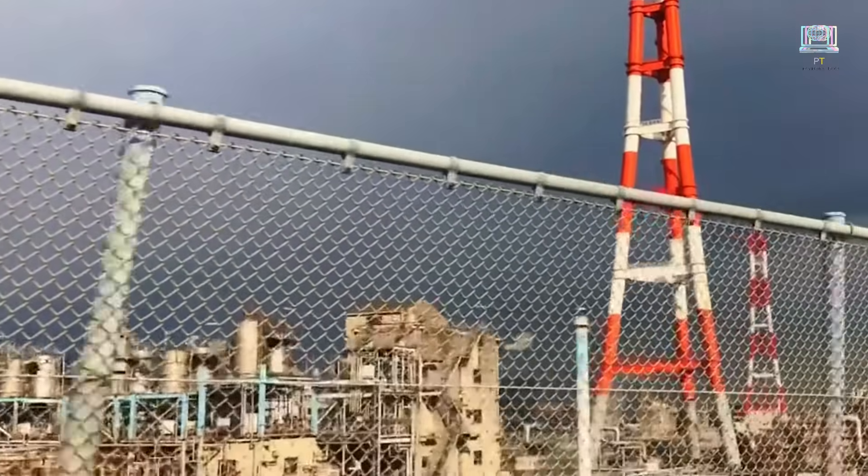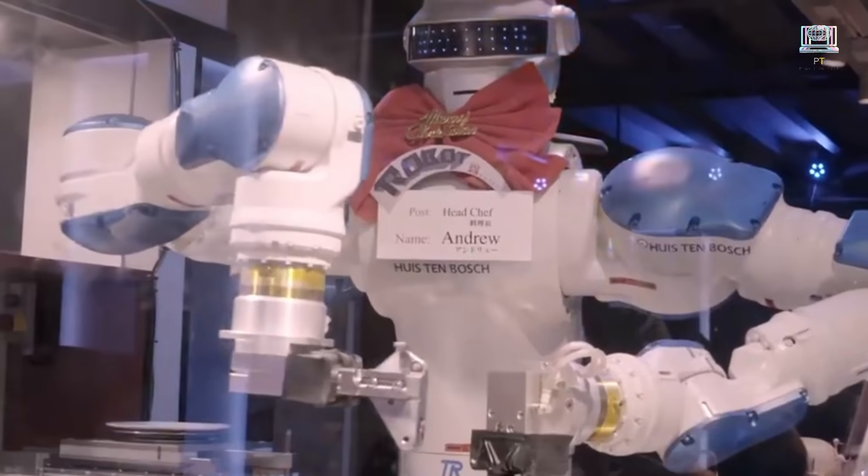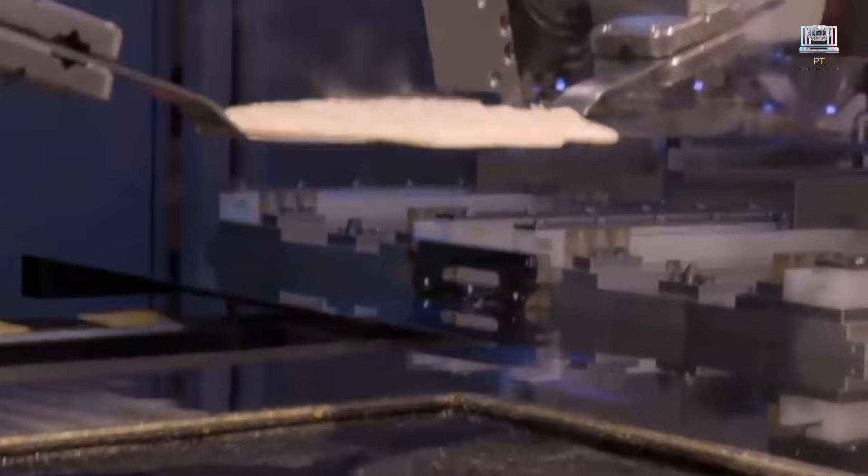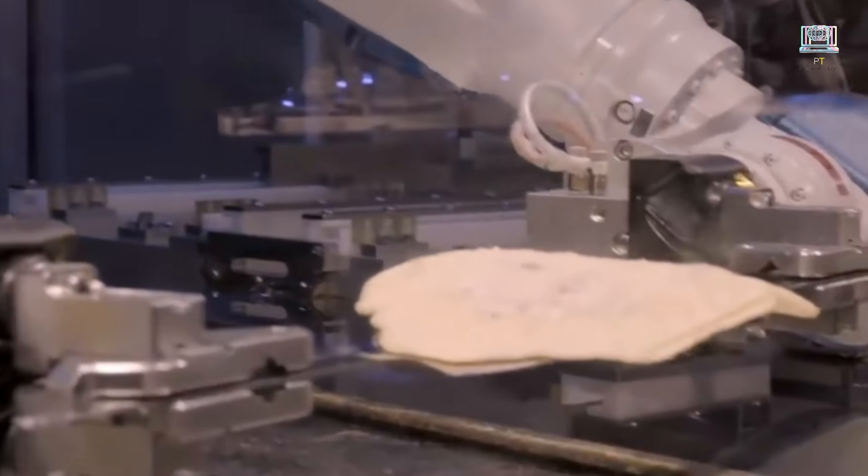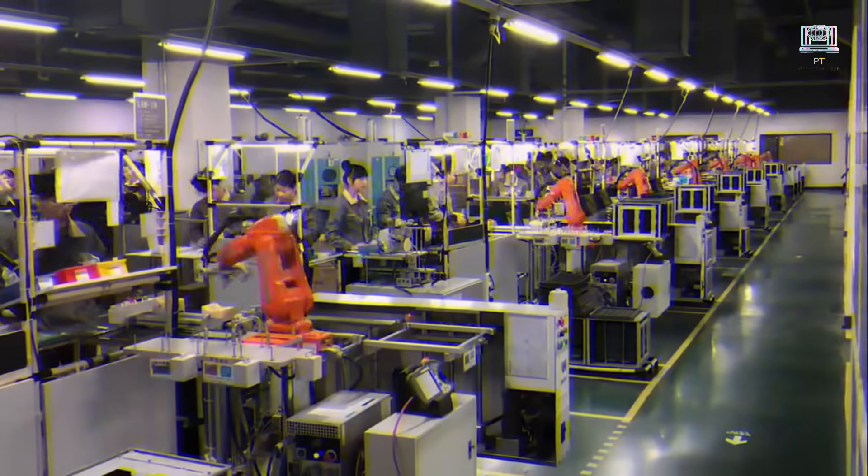The first industrial revolution kick-started it all, embracing mechanization and the power of water and steam to boost production. Following suit, the second industrial revolution electrified the world with assembly lines, revolutionizing mass production.